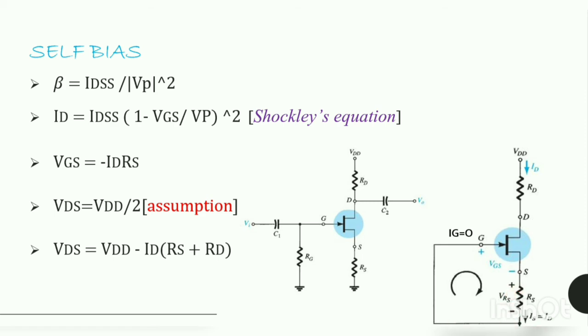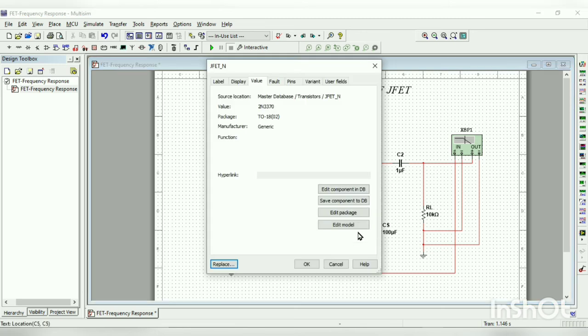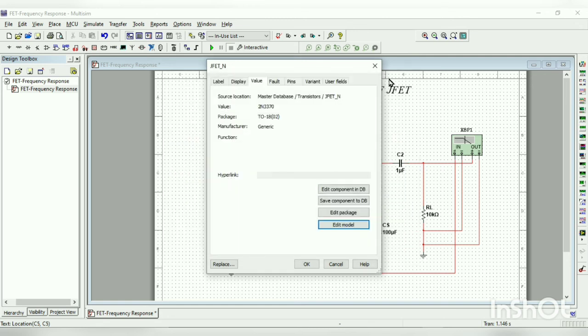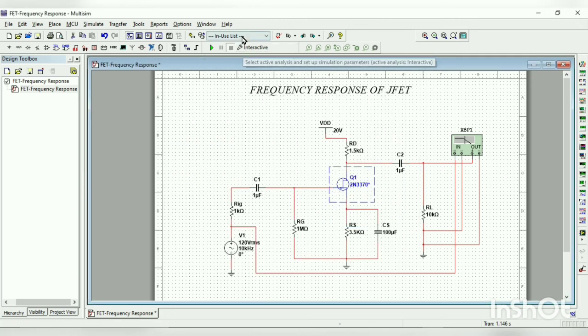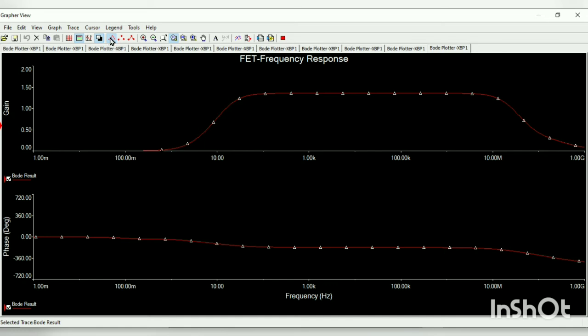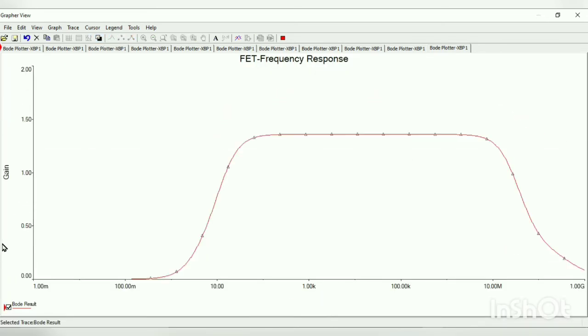Now we will simulate the circuit. Here we have the FET circuit in the self-bias configuration. The transistor is edited with a beta value of 0.222 mA per volt square. We are going to run the simulation in interactive mode. Here we are in need of only the gain plot.